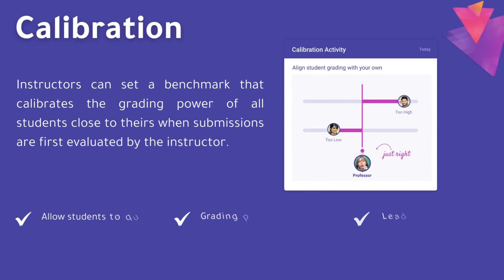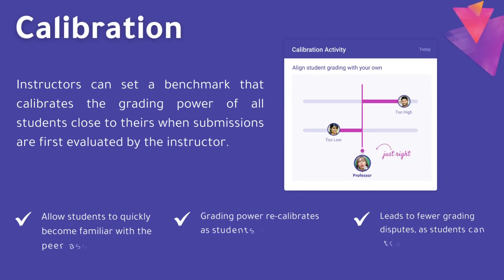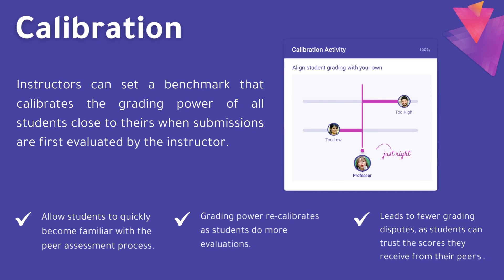Critic has a calibration feature, allowing you to set a standard for how an ideal submission should look, letting you calibrate the grading power of all students based on how closely they were able to follow your example. The closer they are, the higher the grading power, which means that their peer reviews will have more weight.